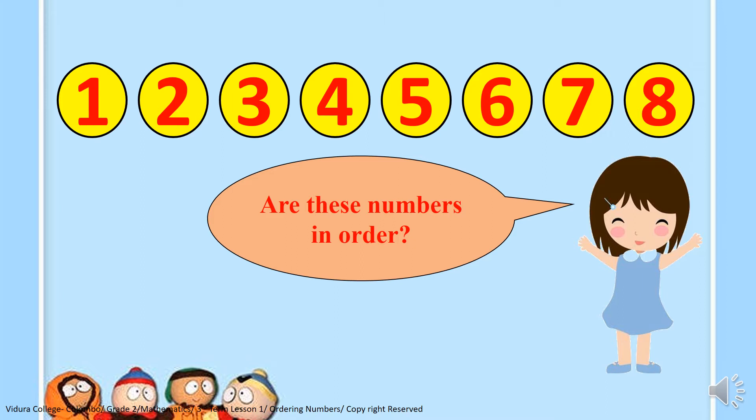Now, you can see there are some numbers here on the screen, starting from 1 and finishing with number 8. If I ask you a question — are these numbers in order? Yes, they are. They are starting from 1, 2, 3, 4, 5, 6, 7 and 8. Those numbers are in order.